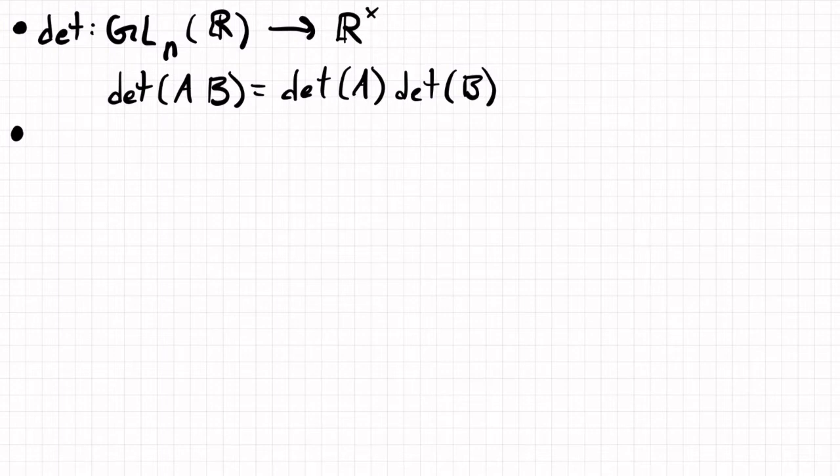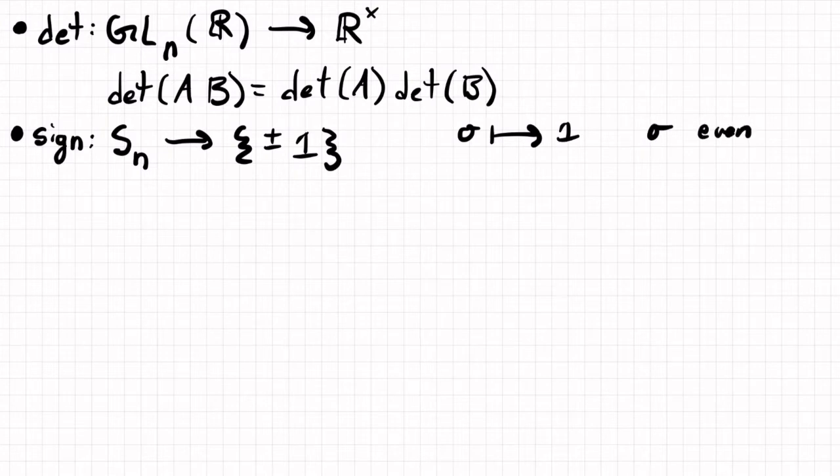So another example, let's talk about the sign of a permutation. So the sign is going to take our group of permutations Sn, and it's going to go to the group plus or minus 1. And so the way that this map is going to work is sigma goes to 1 if sigma is an even permutation, and sigma goes to minus 1 if sigma is an odd permutation.